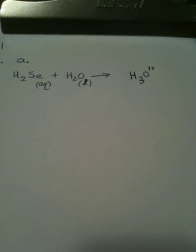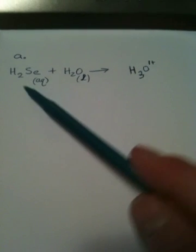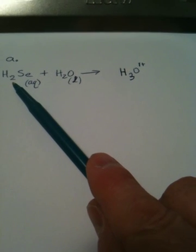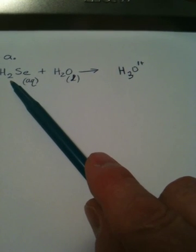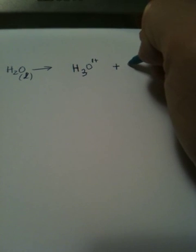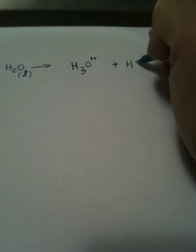So, now you have the hydronium ion, and now we look over here. When this guy gives away one of the hydrogens, what is he going to look like? So, we go over here, and we write this guy with one less hydrogen. And so, that has HSe.